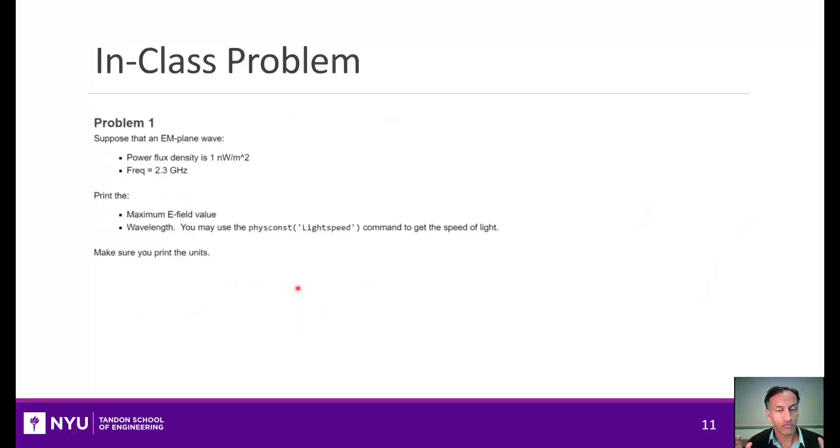This wraps up our first unit. If you go to the GitHub link, which is on the link below this video, you will see an in-class problem. This is a very simple problem, just make sure you understand some basic manipulations of electric fields and wavelengths. It's in MATLAB, you can compute it there. There's also solutions in the GitHub, and once you understand that, go on to the next unit.